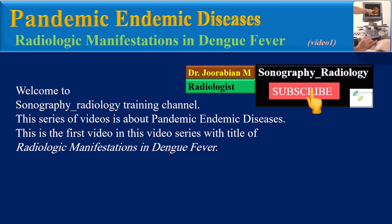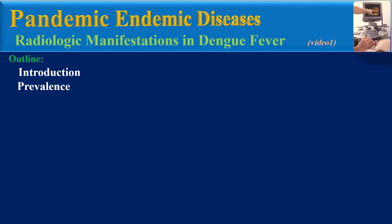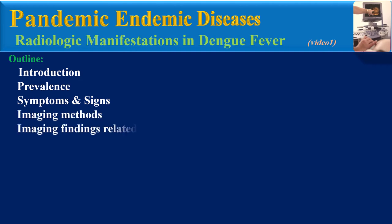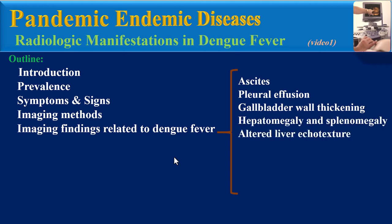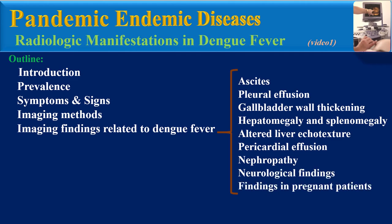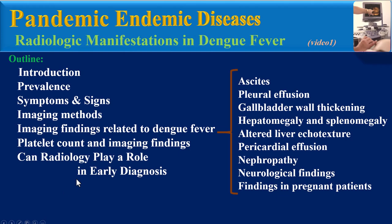Hello, welcome to the Sonography Radiology Training Channel. This series of videos is about pandemic and endemic diseases. This is the first video in this series, with the title 'Radiologic Manifestations in Dengue Fever.' The outline of this presentation includes: introduction, prevalence, symptoms and signs, imaging methods, and imaging findings related to dengue fever — including ascites, pleural effusion, gallbladder wall thickening, hepato and splenomegaly, altered liver echotexture, pericardial effusion, nephropathy, neurological findings, and findings in pregnant patients, as well as the correlation between platelet count and imaging findings.